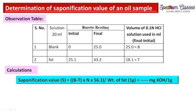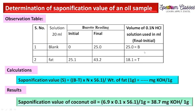The saponification value formula is: (B − T) × N(KOH) × 56.1 / weight of fat in grams, where B is the blank volume (more HCl consumed), T is the test solution volume, N is the normality of the KOH solution, and 56.1 is the molecular weight of KOH. Here in this experiment, B − T = 6.9; multiplied by 0.1 normality and 56.1, then divided by 1 gram, we get the saponification value in milligrams of KOH consumed per gram of fat.